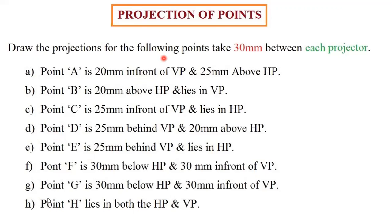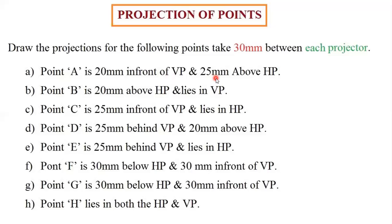In this question, I have taken 8 points. In an examination, they will be giving 8 to 10 points for 20 marks. Take 30 mm between each projector — that is, between each point we have to keep a distance of 30 mm. If they give the distance, keep that distance. If they haven't given one, take approximately 20 mm distance between each projector. So between point A and point B — the first question is: point A is 20 mm in front of VP and 25 mm above HP.